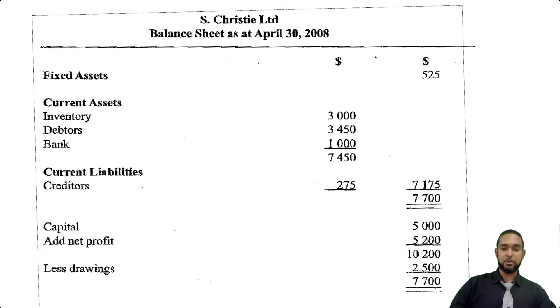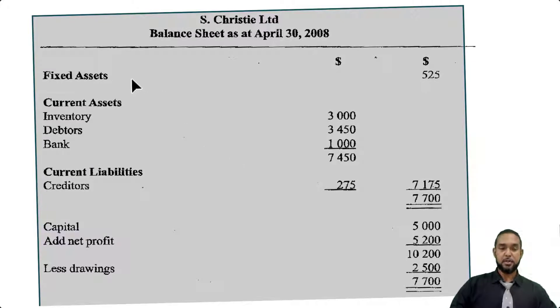Then we have a balance sheet or statement of financial position. So we have the fixed or non-current assets, current assets—inventory, debtors, bank—and then current liabilities. In this format they show working capital. When you add it to non-current assets you get total assets less current liabilities. In your capital section you have the capital at start, add the net profit, minus the drawings, and your balance sheet balances.